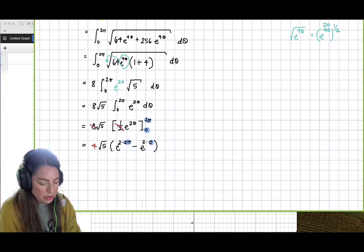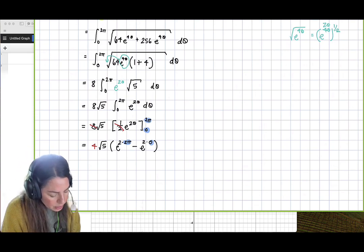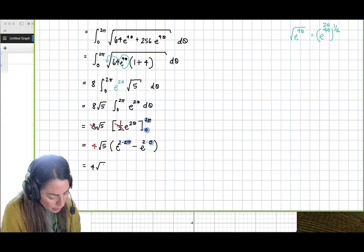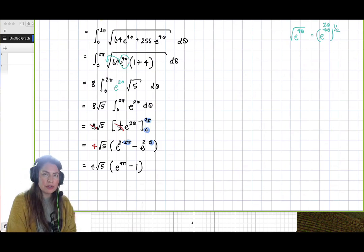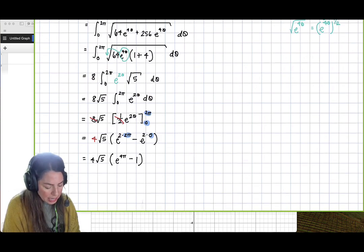using the Fundamental Theorem of Calculus part 2. So we get 4 square root 5 times e to the 4 pi minus 1, because e to the 2 times 0 is e to the 0, which is 1. Now this is the exact answer.